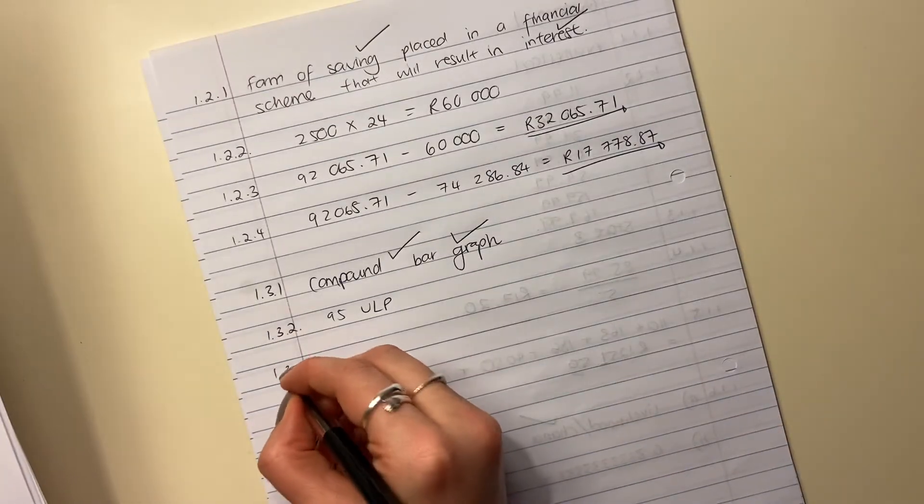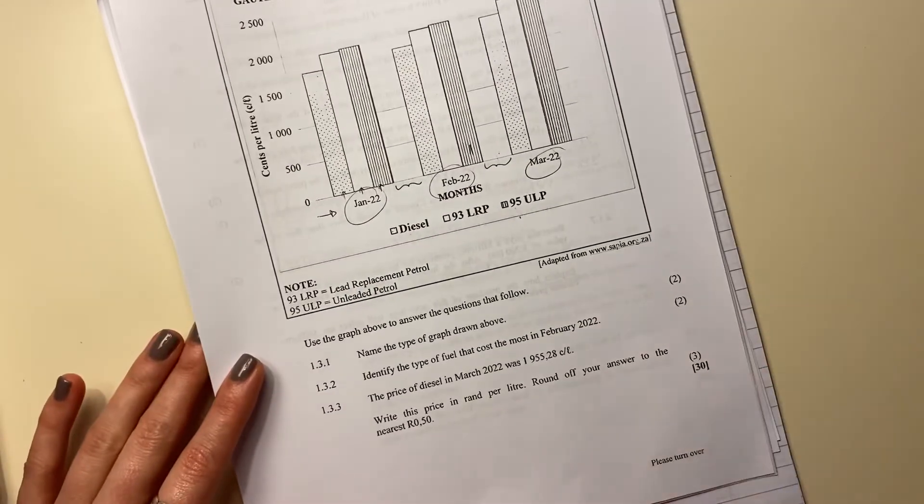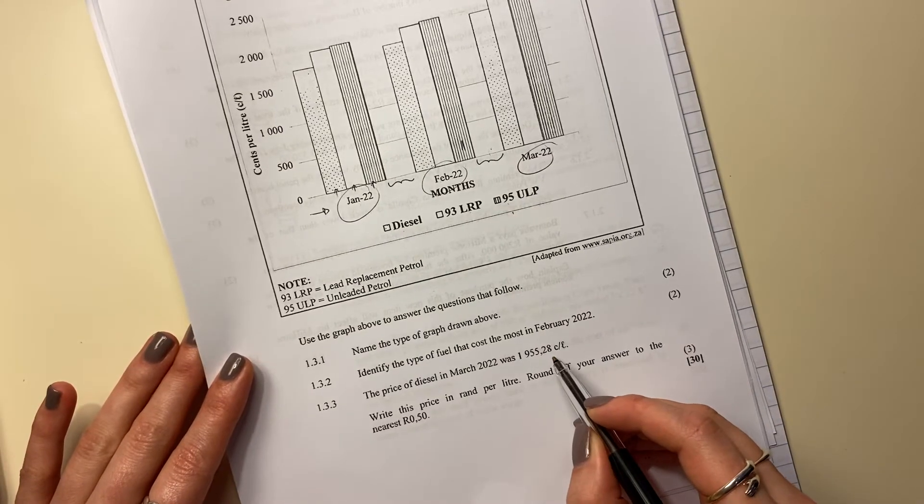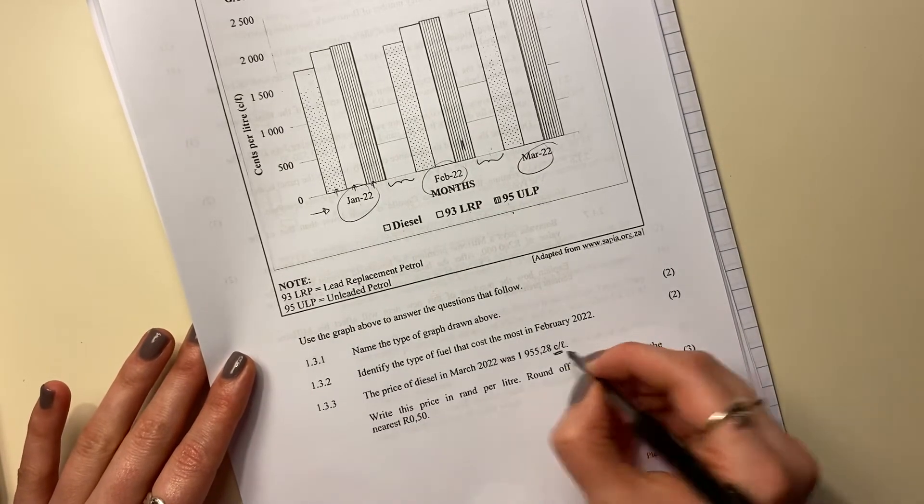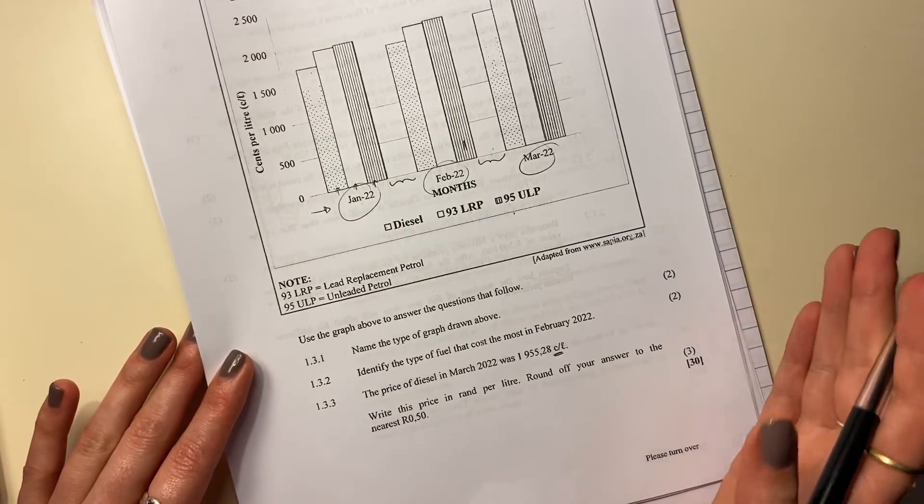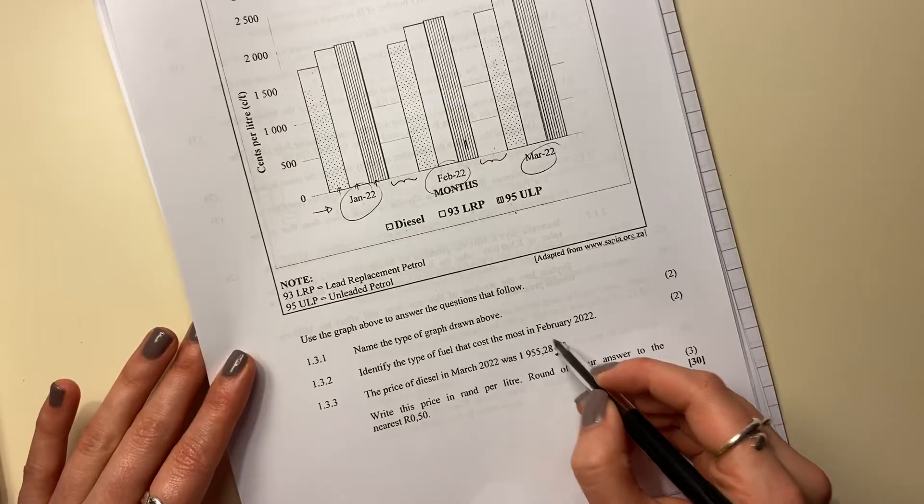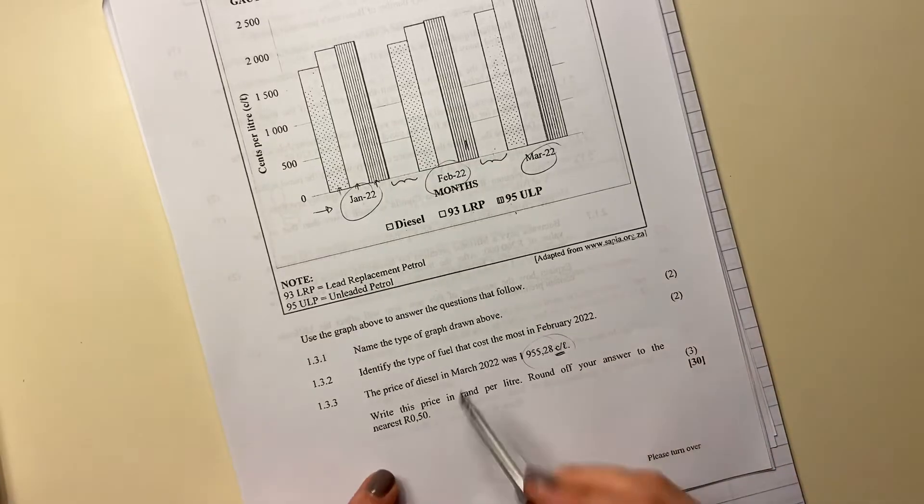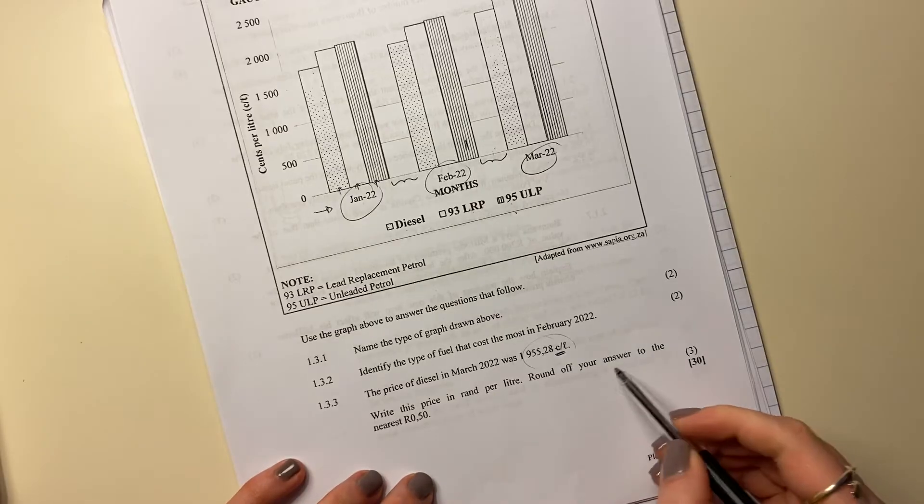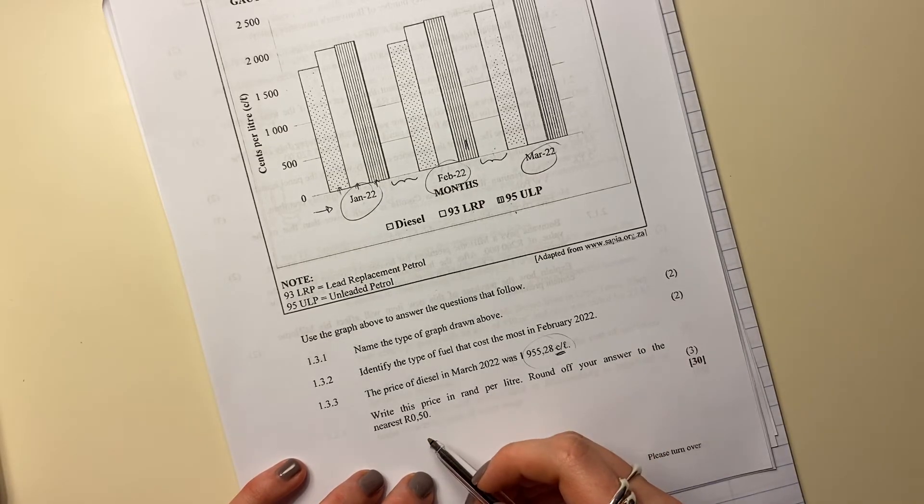1.3.3. The price of diesel in March 2022 was 1,955.28 cents per liter, important cents. Because students, when they did this question, they were like, goodness gracious, petrol is so expensive. It is, but this is in cents. So we're wanting to change this into rands. So it says here, write the price in rand per liter, round off your answer to the nearest 50 cents.